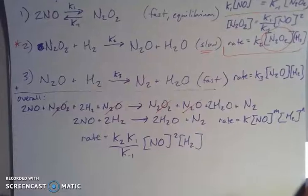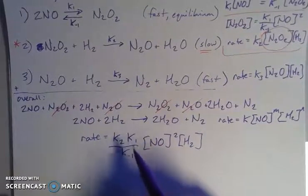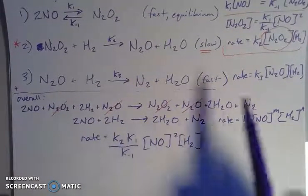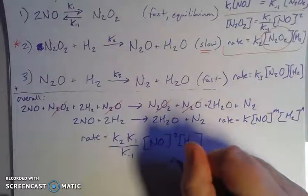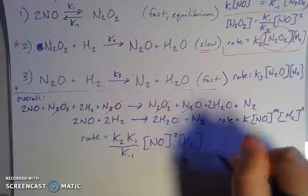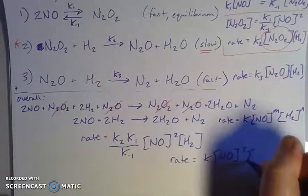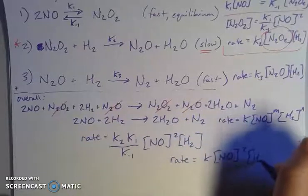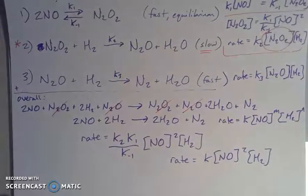Now this is kind of messy with all of these k's, but you can combine them together since they're all constants, so you end up with a final expression: second order with respect to nitrogen monoxide, first order with respect to hydrogen. And again, you have to get that through the substitution process.